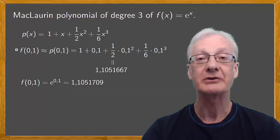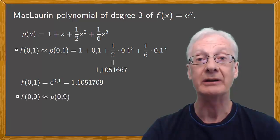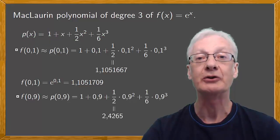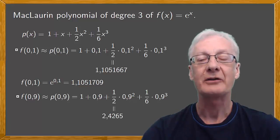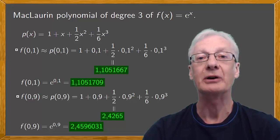If we do the same for 0.9, which is obviously further away from 0 than 0.1 is, then you'd expect the approximation to be worse. If we approximate f(0.9) by p(0.9), substituting 0.9 in the polynomial, the result we get is 2.4265. Now, the exact value of f(0.9), which is e raised to the 0.9, is 2.4596031. So it's still a reasonably good approximation, but it's not as good as at 0.1, because we have moved away from the value where we calculated the Taylor polynomial, which is where a equals 0.